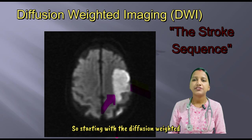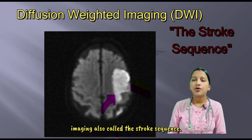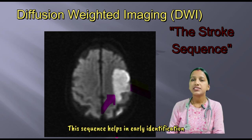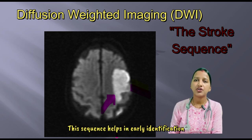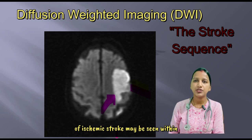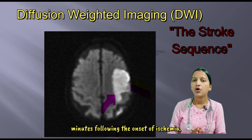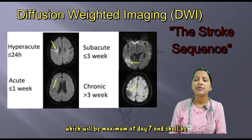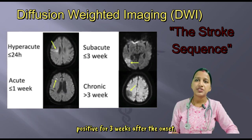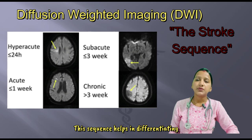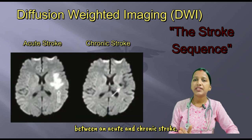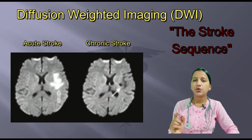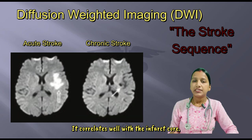Starting with diffusion-weighted imaging, also called the stroke sequence. This sequence helps in early identification of ischemic stroke and may be seen within minutes following the onset of ischemia. The lesion will be hyper-intense, which will be maximum at day 7 and shall be positive for 3 weeks after the onset. This sequence helps in differentiating between an acute and a chronic stroke and correlates well with the infarct score.